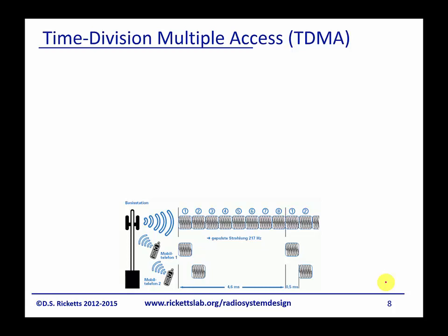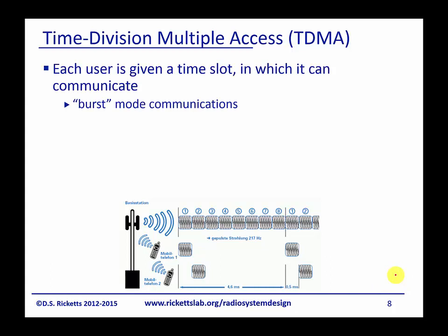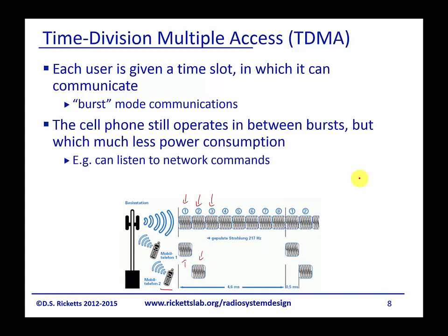Time division multiple access, or TDMA, is where each user is given a time slot in which to communicate, and the communication happens in bursts. We coordinate between the base station and the mobile phones and assign each one a different time slot. This involves quite a bit of time coordination, putting some overhead burden on getting each radio to talk at the appropriate time. However, there's enough bandwidth that this is easily done. The cell phone is still on between bursts, just listening for overhead information about when its next time slot would be.